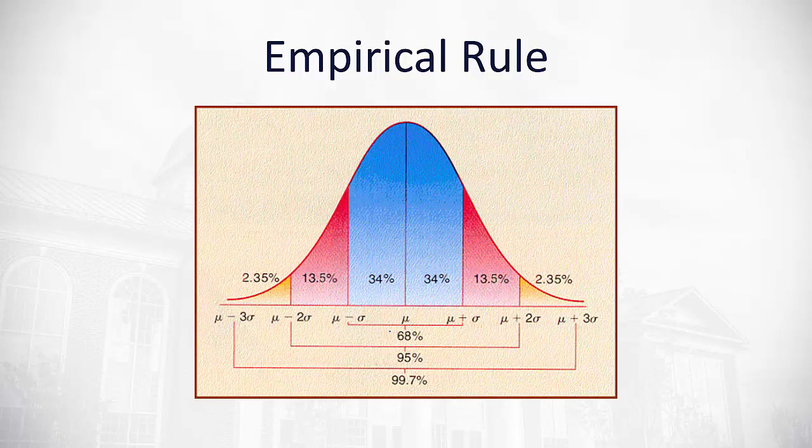The idea of the empirical rule is that 68 percent of all the data values are going to lie either one standard deviation above the mean, one standard deviation below the mean, or somewhere in between, and it's symmetrical, 34 percent on each side. We say 68 percent of the data is within one standard deviation of the mean.